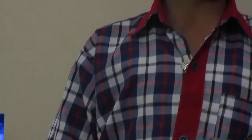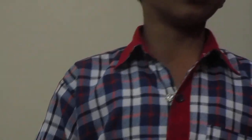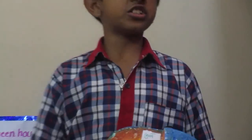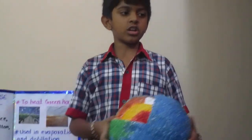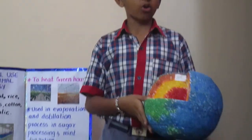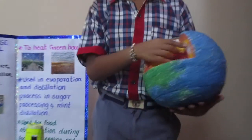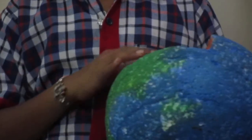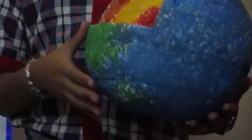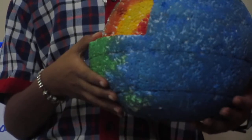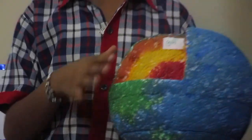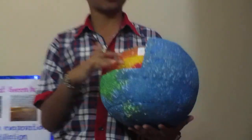The heat from the center of the earth comes outwards and heats up the outer layers of rock called the mantle. When this type of rock melts and becomes molten, it is called magma. Rainwater sometimes seeps down through the cracks and becomes superheated by the hot rocks below.